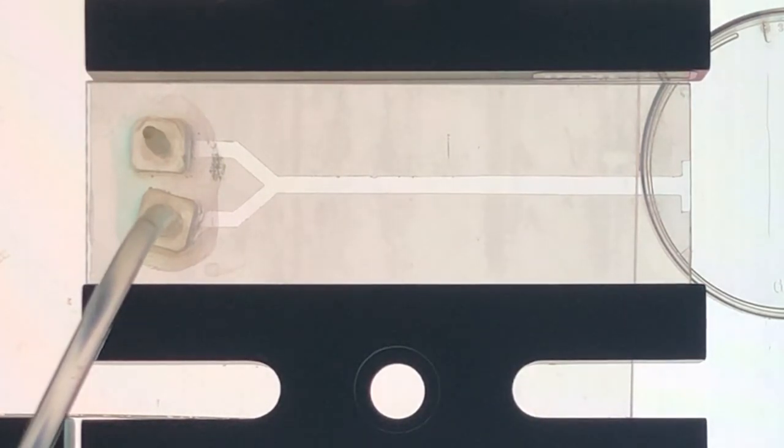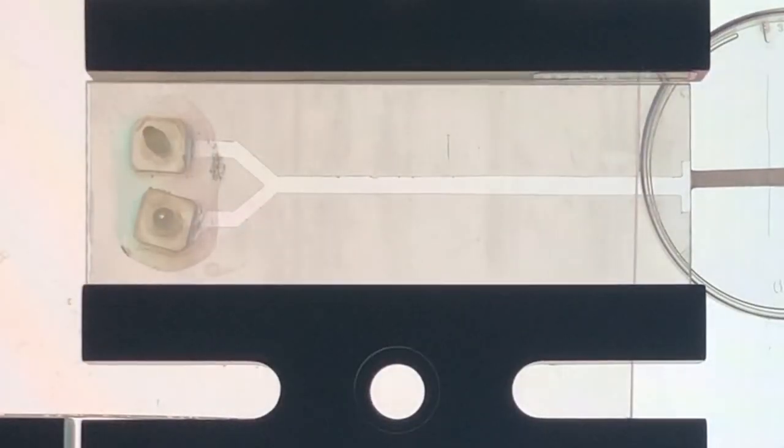In a typical experiment, the channel is initially filled with DI water. And then two syringes containing the reactant solutions, sodium hydroxide and cobalt chloride in this example, are connected to the barb fittings.